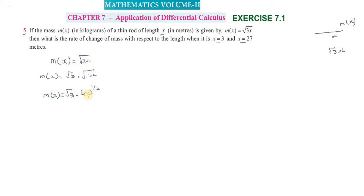Now we take the derivative. With respect to x, d/dx of m(x). We differentiate √3 · x^(1/2). Since √3 is constant, we differentiate x^(1/2) to get (1/2) · x^(1/2 - 1) = (1/2) · x^(-1/2).